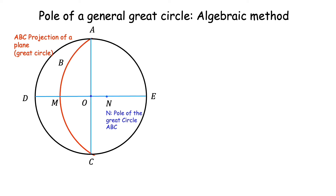Call that point N — then N is the pole of the great circle ABC. We can justify this construction as follows: since N is placed at 90 degrees away from M by construction, N is perpendicular to the direction M lying in the plane ABC. Since N lies on the diameter DE, and the diameter DE contains all directions which are perpendicular to A, N is also perpendicular to the direction A lying in the plane. Thus N is perpendicular to all the directions lying in the plane, and hence it is the plane normal — the pole of the great circle ABC.